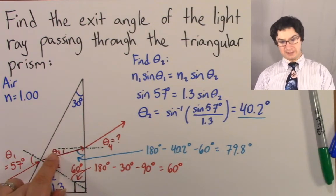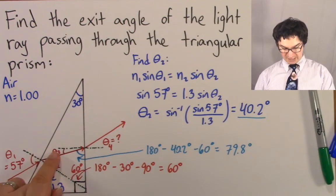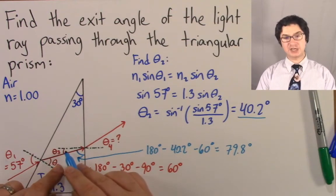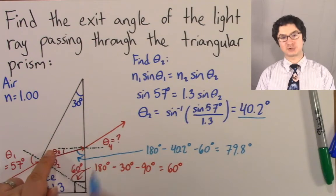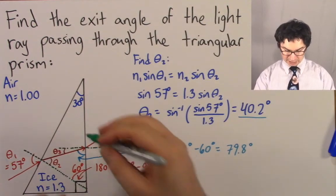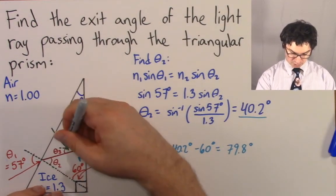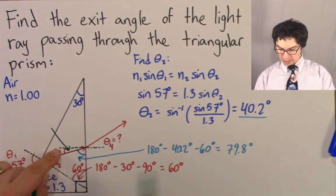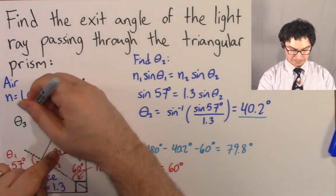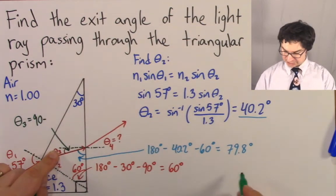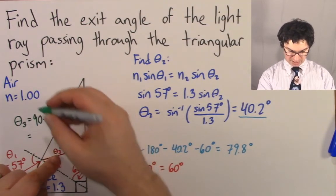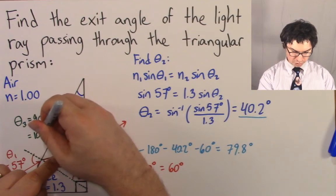We've found this angle to be 79.8 degrees, but that's still not theta 3. How can we now find theta 3? Well, if this angle is 79.8 degrees, and we know that this angle plus theta 3 has to add up to 90 because the normal is always perpendicular to the side, then we can say theta 3 plus 79.8 equals 90, so theta 3 equals 90 minus 79.8.